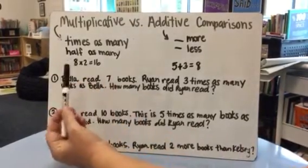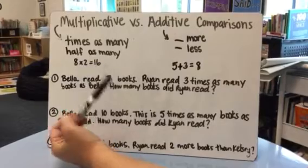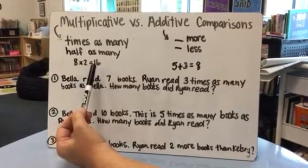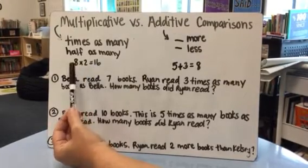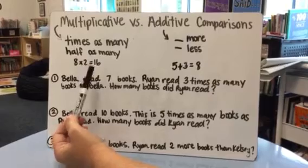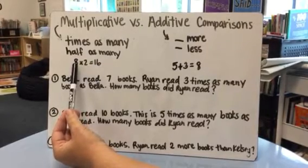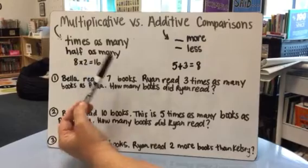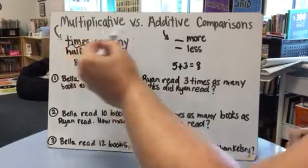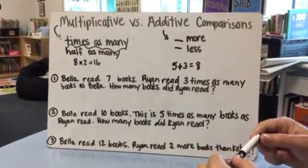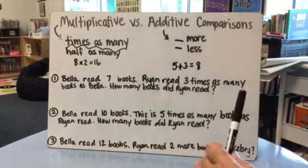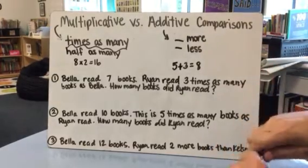Here's an example: when you look at the equation 8 × 2 = 16, we talked about the vocabulary — being able to recognize that 16 is two times as many as eight, or we could say 16 is eight times as many as two. Whenever you see 'times as many,' that's a big clue that the relationship is through multiplication — those numbers have a multiplicative connection.